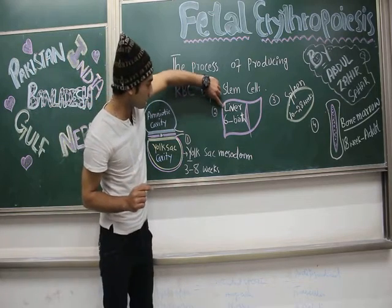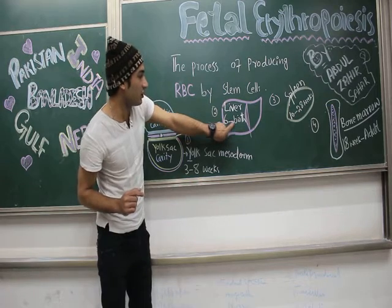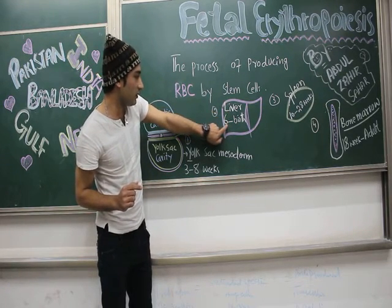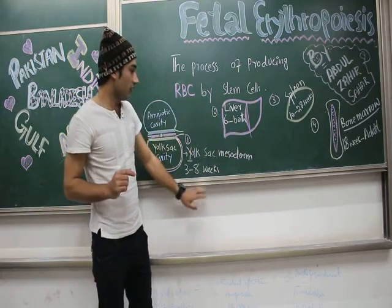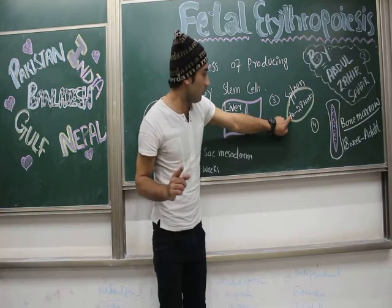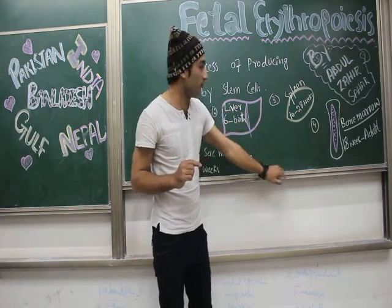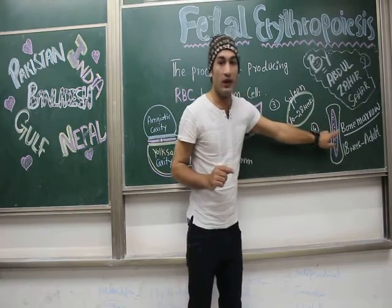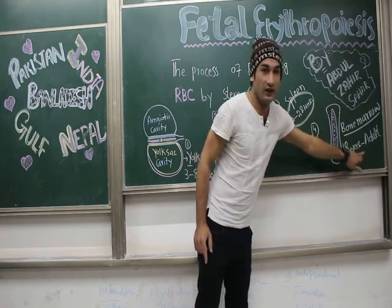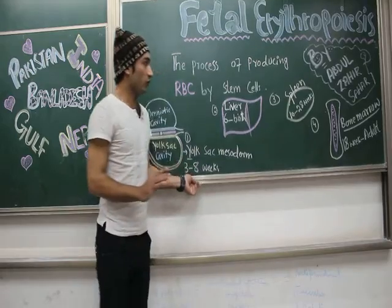The second site is the liver, where erythropoiesis occurs from six weeks till birth. The third site is the spleen, where it occurs from ten weeks to twenty-eight weeks. The fourth site is the bone marrow, where erythropoiesis occurs from eighteen weeks to adulthood.